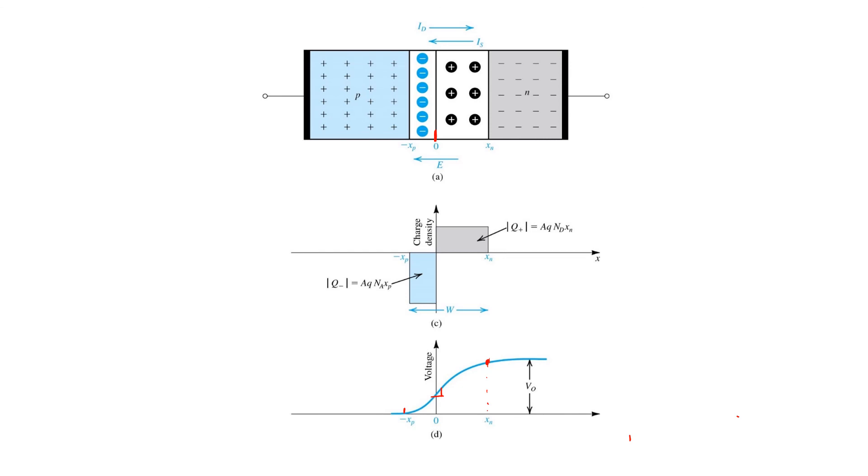So that's the P-N junction with no external connections made to it in steady state. But what really gets interesting is the behavior of the P-N junction when we apply a voltage or make connections to the two terminals. We'll talk about that next. Thank you very much.